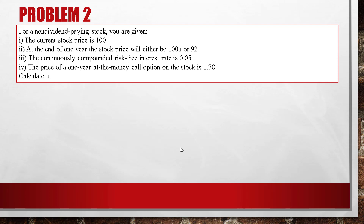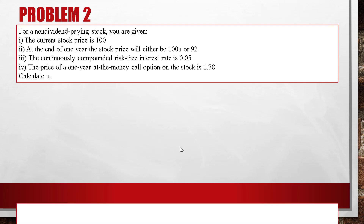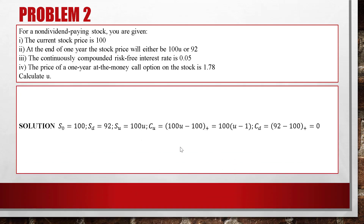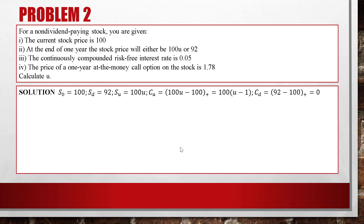Let's summarize the question. We have S0 = 100, SD = 92, and SU = 100u. CD = 0, since the put pays nothing in the up state when it's a call.